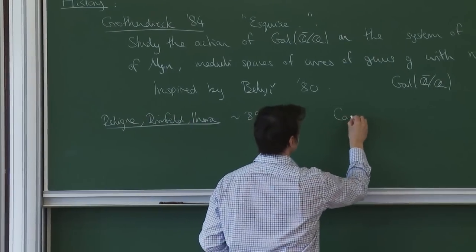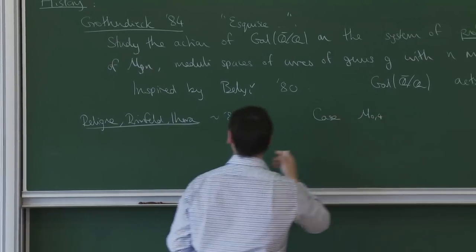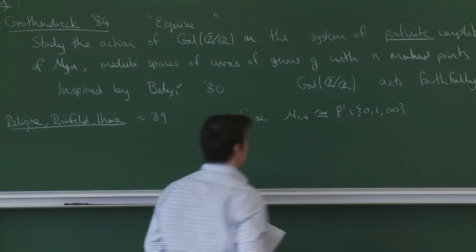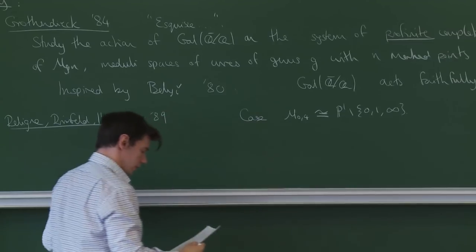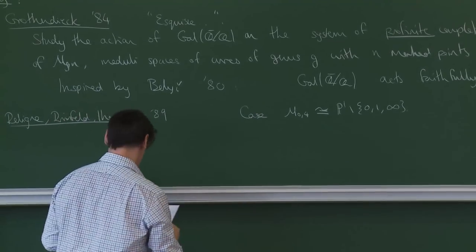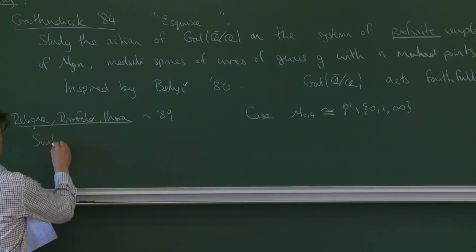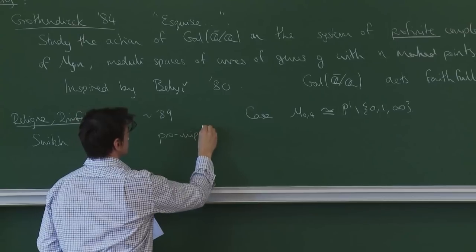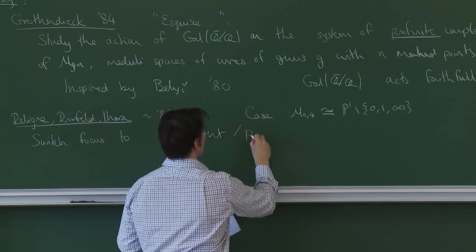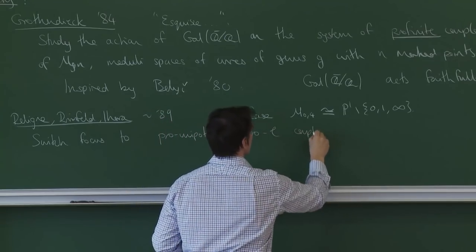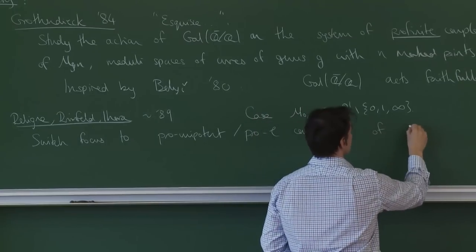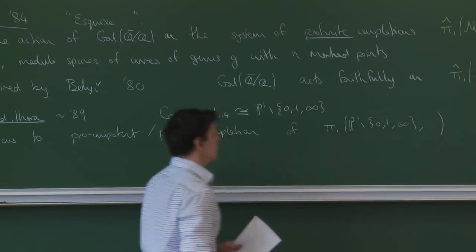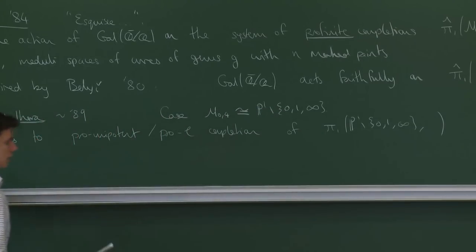They focused on the case M_{0,4}, which is isomorphic to the projective line minus three points. Drinfeld also considers M_{0,5} in a significant way. Instead of looking at the pro-finite completion, they switched focus to the pro-unipotent completion of pi-1 of P1 minus {0,1,infinity}, with respect to some base point. This is just a free group on two generators — nothing could be more concrete.